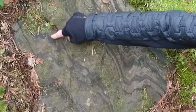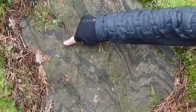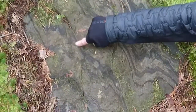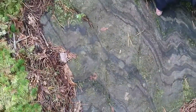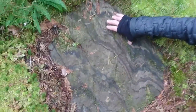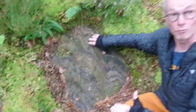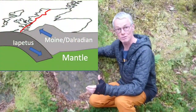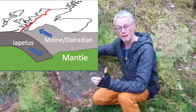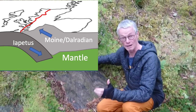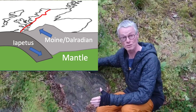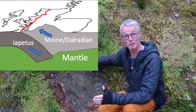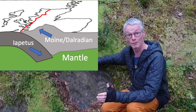You can see it really clearly here — very narrow, wide, narrow, wide, narrow. That's all telling us about the regional senses of compression and extension, entirely consistent with what's happening during the Caledonian.